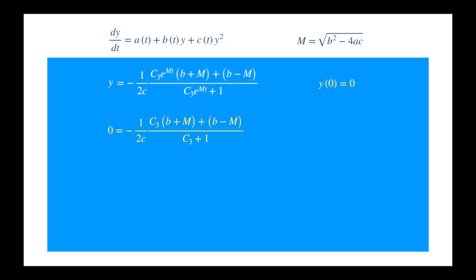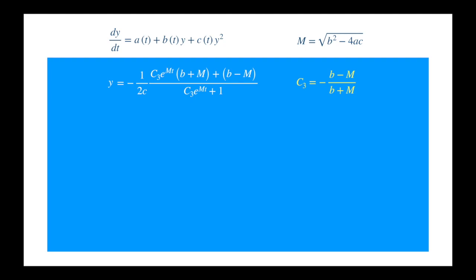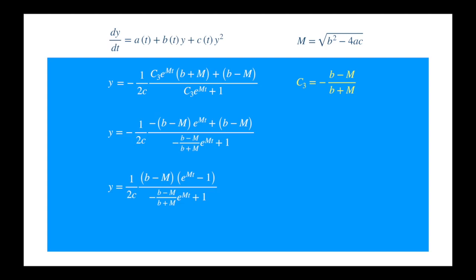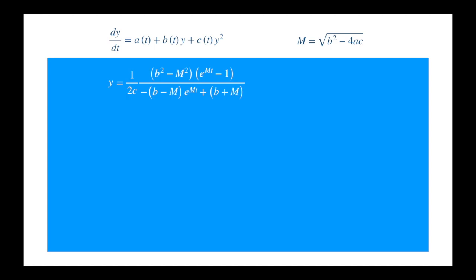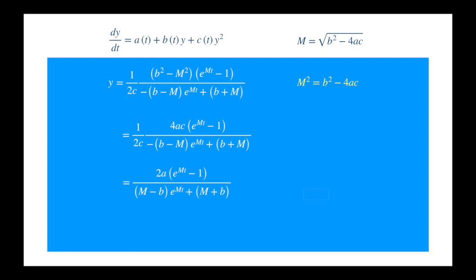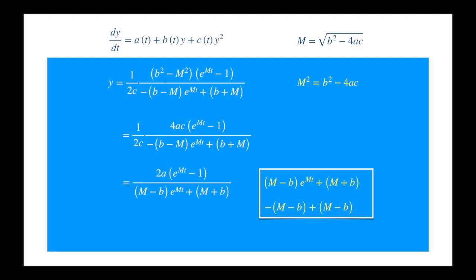Evaluate the solution at t equals 0, get rid of the terms in the denominator, and then solve for c3. So we have determined the constant given the initial condition. We can substitute for c3, where we cancel the b plus m in the numerator. We can factor out b minus m in the numerator, and then multiply both the numerator and denominator by b plus m. So we have the solution, but we can simplify it even further. We know m squared, so b squared minus m squared is just equal to 4 times ac. Now the two c's can't wait to eliminate each other. We can play with the denominator a bit more — just add and subtract m minus b, then factor out m minus b in the first terms — substitute into the main expression, and we declare success.